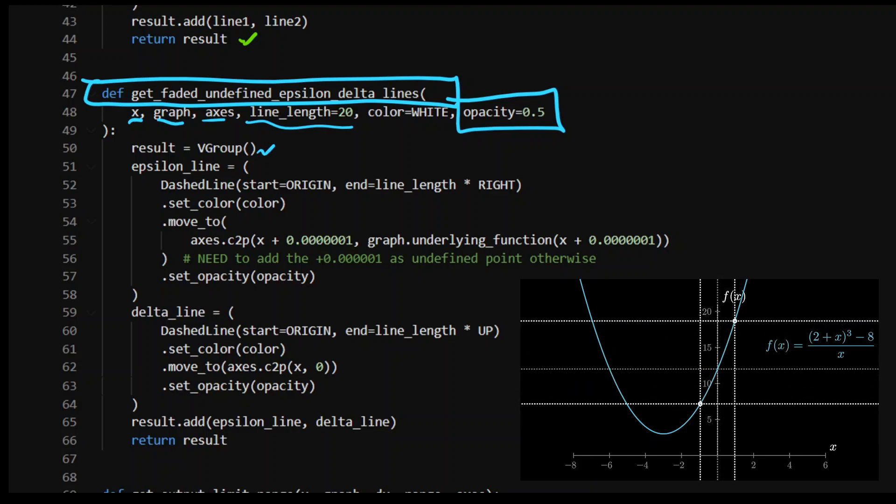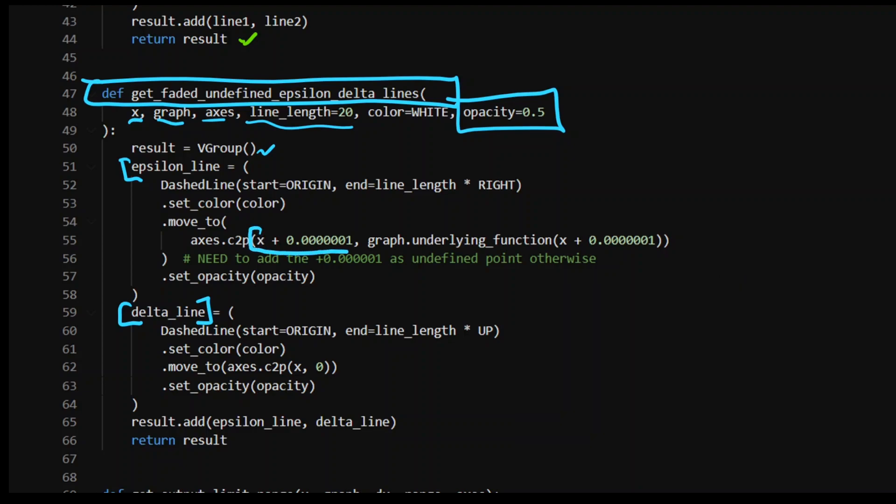Again, everything's vector group. Now I'm just taking in one epsilon line and one delta line here. Now, again, it considers that x point. But you'll see here that I've got x plus 0.0000001 for that point. And we need to put that within Python because if we just put x, typically that x point has the limit does not exist. So if you're doing this for the function, for example, x squared over x, and you try and evaluate this, if you try and evaluate this sub n x equals 0,